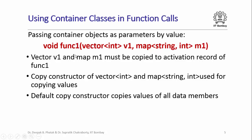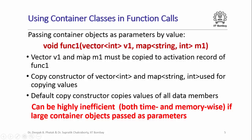How is this copying going to get done? It will be achieved by invoking the copy constructor of vector instantiated with int, and of map instantiated with string and int. The default copy constructors are simply going to copy the values of all data members of the object being passed as parameter to the activation record of func1. All the integers in the vector will be copied element by element, and every key-value pair in the map will be copied key-value pair by key-value pair. This process can be highly inefficient both time and memory wise if the container objects being passed are large.